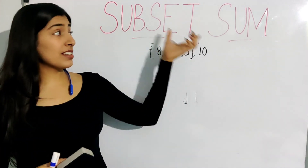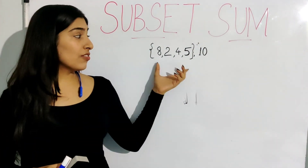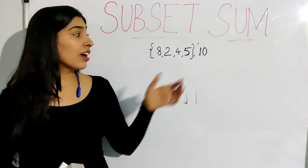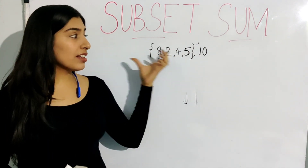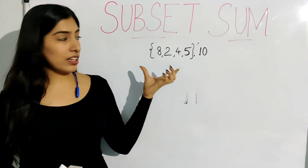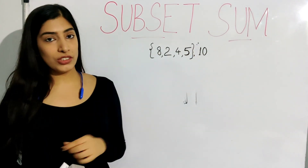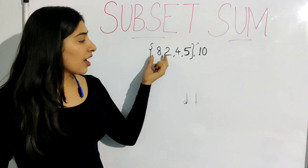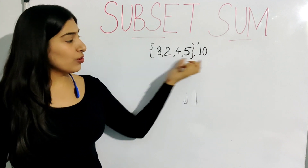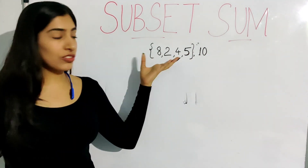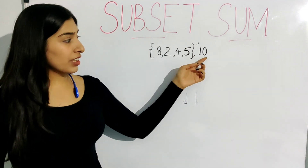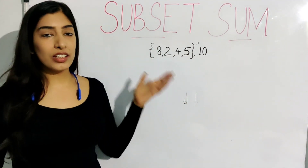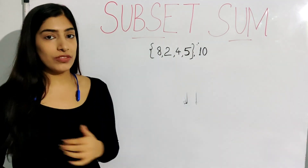Today's question is the subset sum problem. You are given some non-negative numbers in the form of an array or a set, and a sum. You have to check whether there is a subset possible among these numbers so that the sum equals the target. For this case, there are 4 elements in our array and the subset 8 and 2 will sum to 10, so this question will return true. If the sum was supposed to be 16, it would not be possible and the answer would be false.